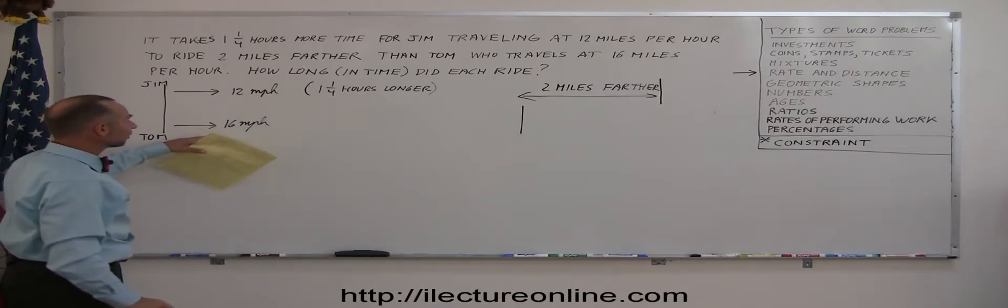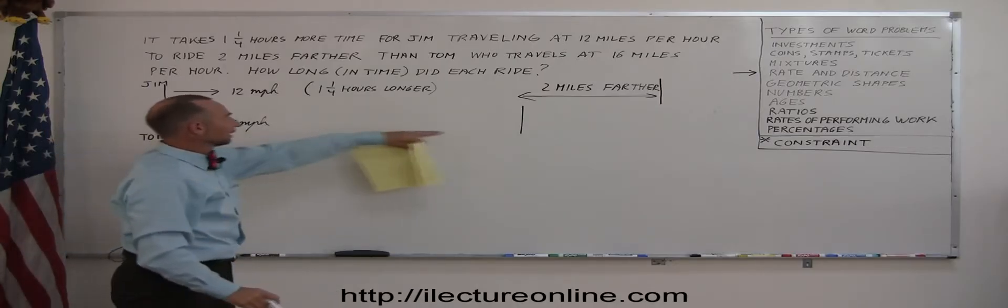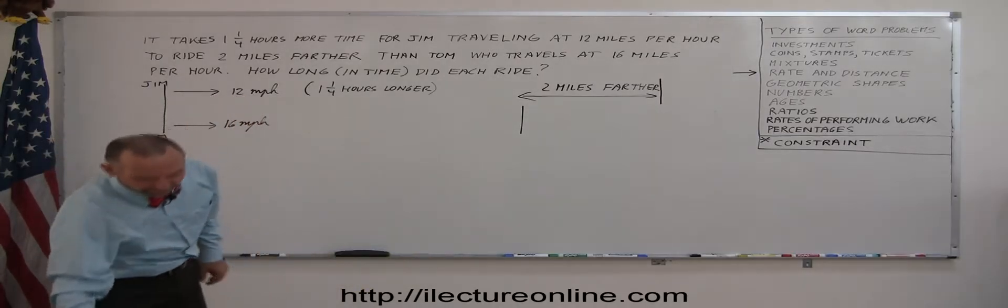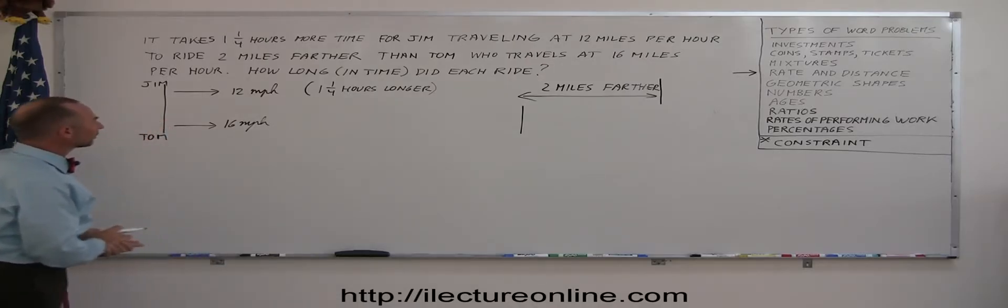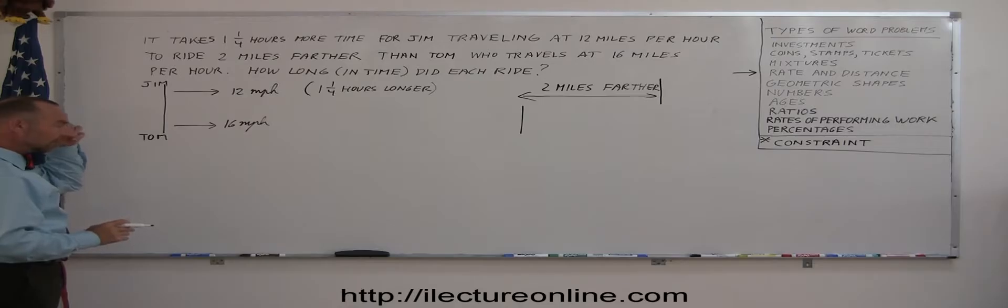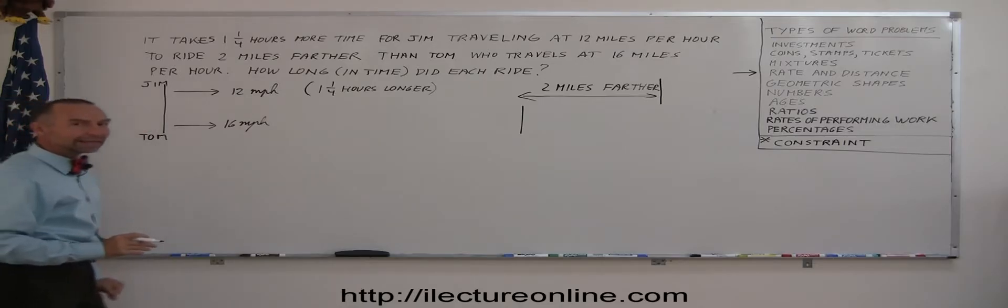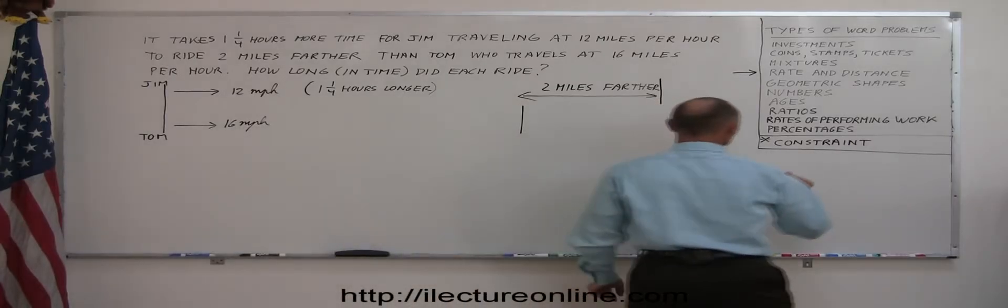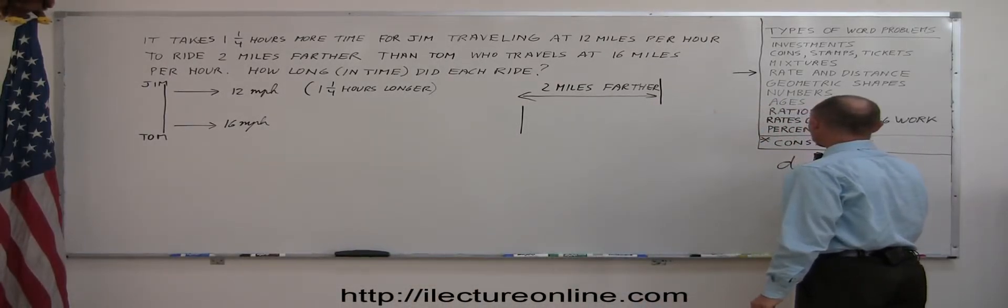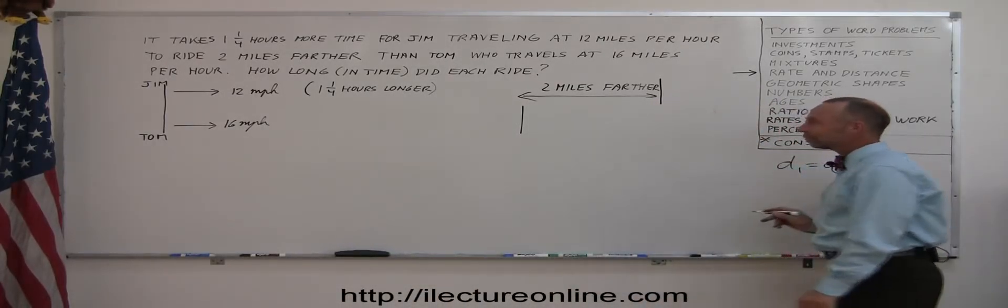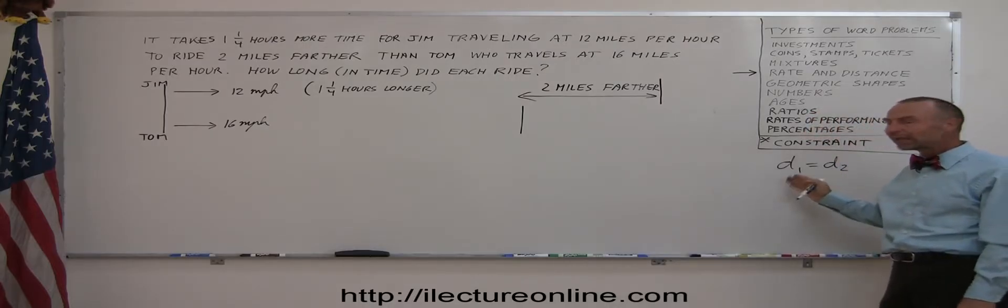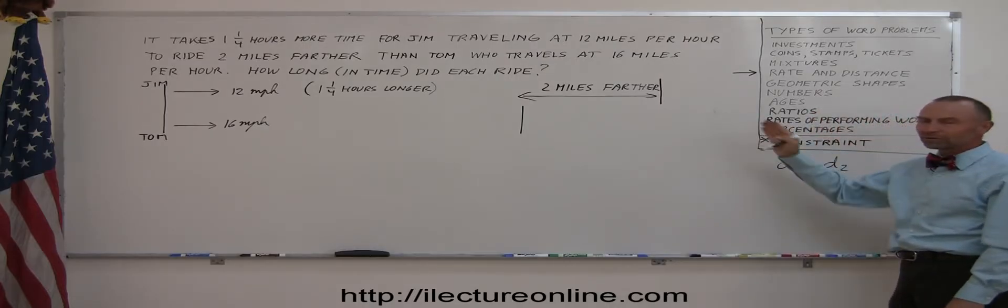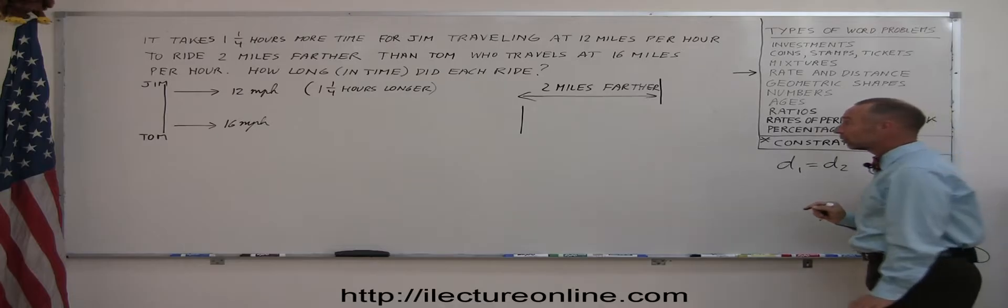And Jim travels for one and a quarter hours more. So one and a quarter hours longer. And not only that, Jim travels two miles farther. So let's say Jim travels all the way to here and Tom only travels to here. So this is two miles farther.